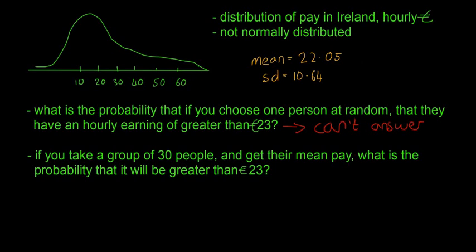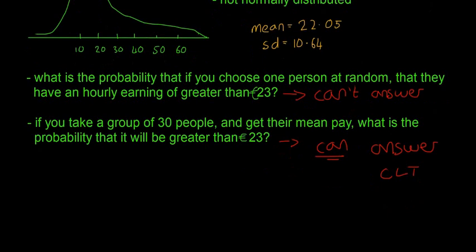However, if you take a group of 30 people and get their mean pay, what is the probability that it will be greater than 23 euro? We can answer this by using the CLT, or the central limit theorem.